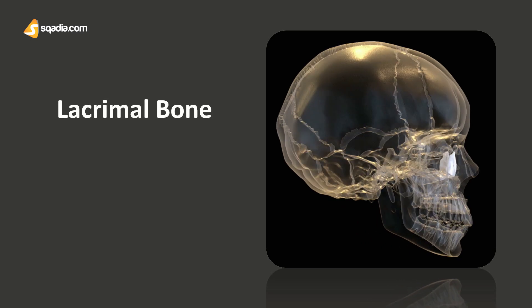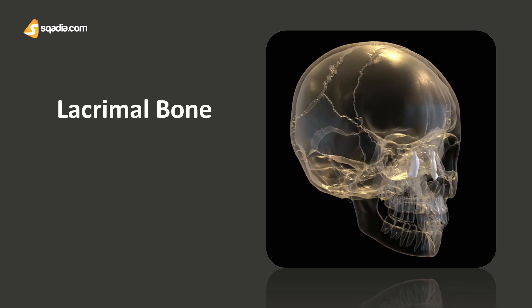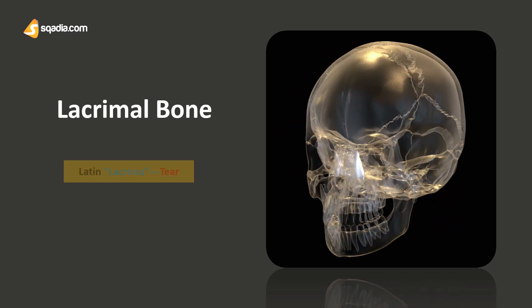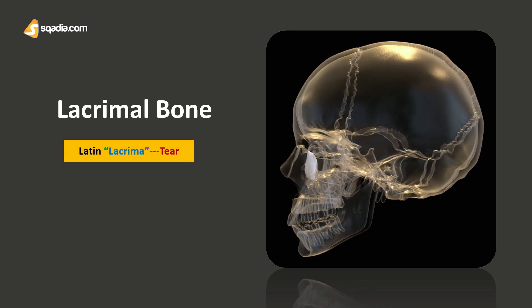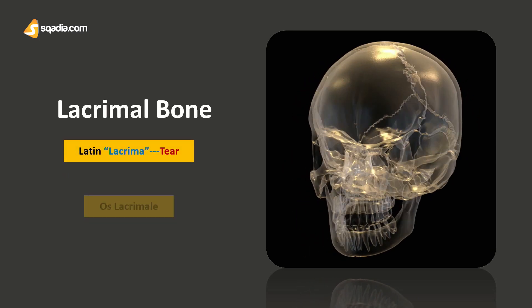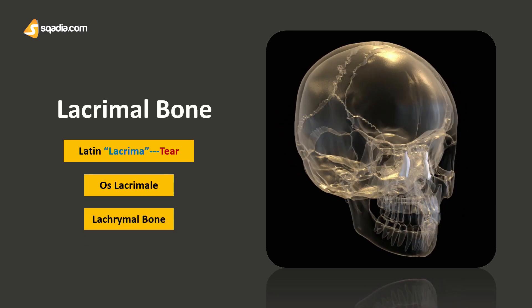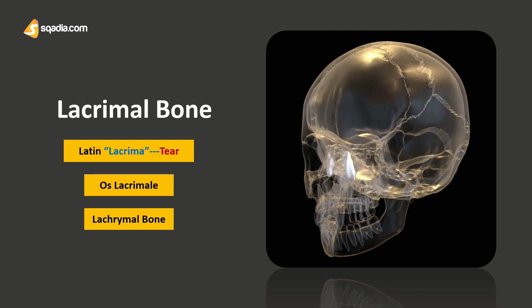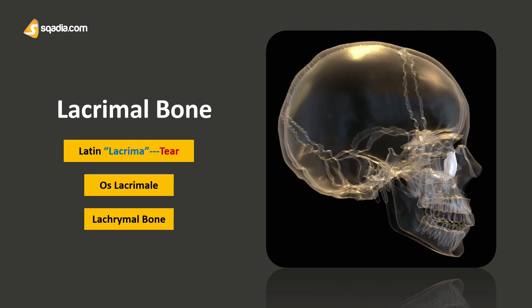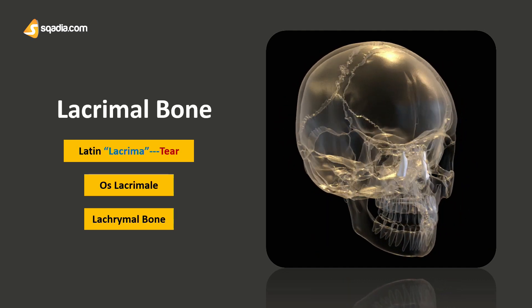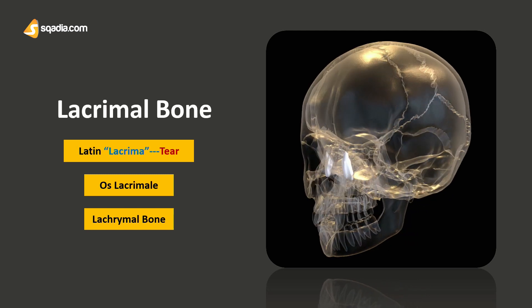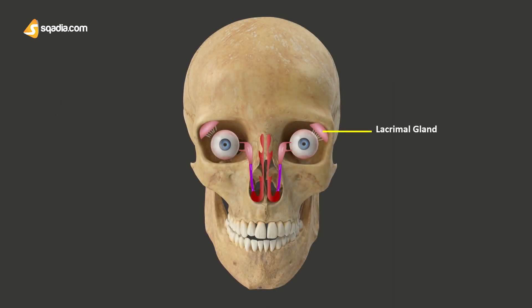If we dissect the name, the word lacrima is Latin for tears. This bone is also called os lacrimale, or sometimes differently spelled as lacrimal bone with a Y. This bone is called lacrimal or related to tears because it is closely related with the nearby lacrimal structures or the tear gland structures.